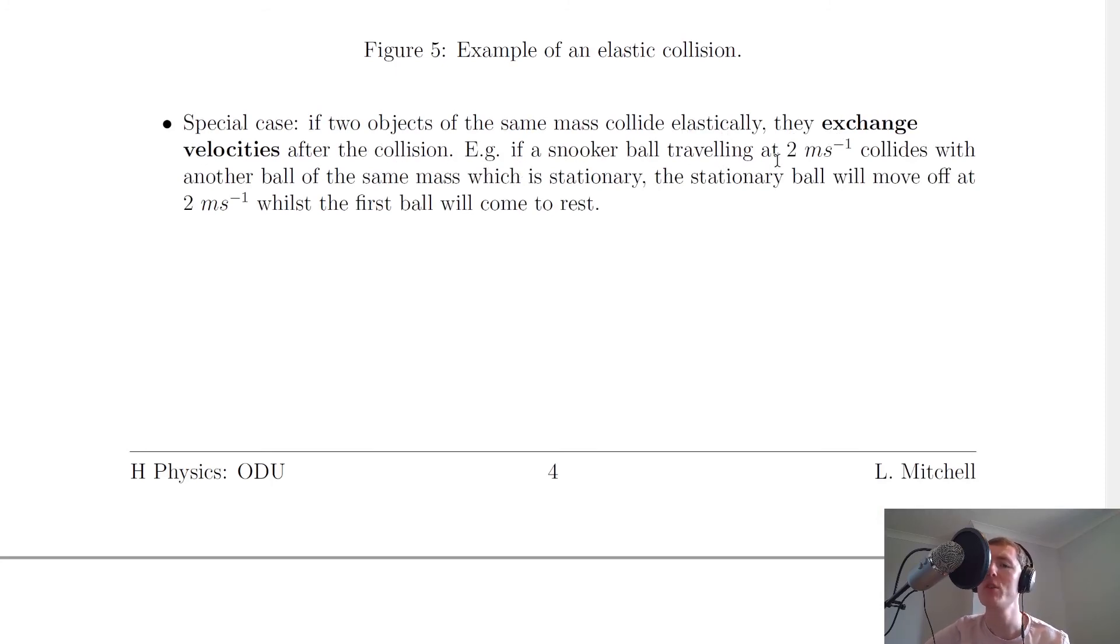For example, if a snooker ball traveling at 2 meters per second collides with another ball of the same mass, which is stationary, then the stationary ball will move off at 2 meters per second, whilst the first ball will come to rest. So that's a specific example which you need to be aware of.